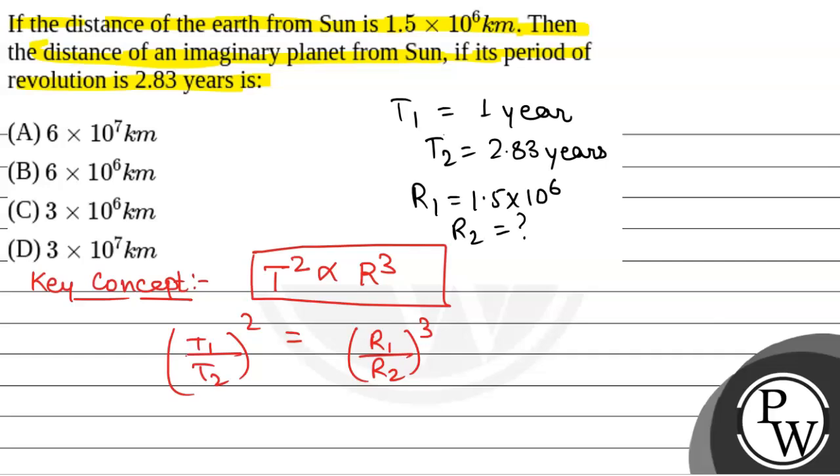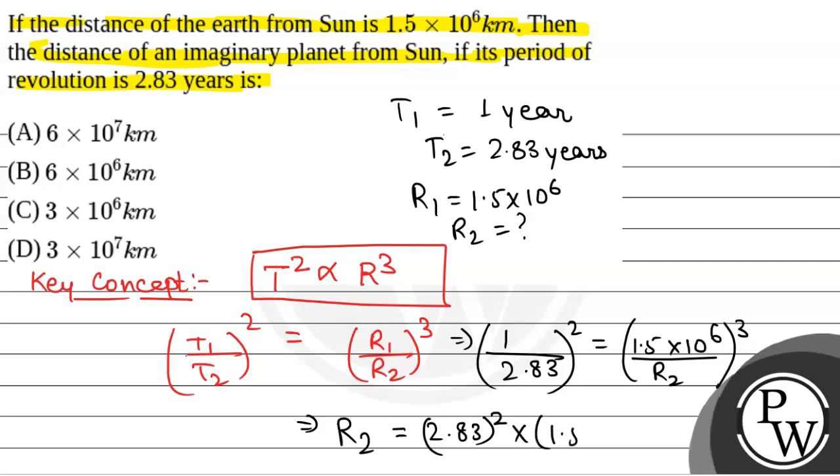We will just put the value that will be 1 divided by 2.83 whole square is equal to 2.83 whole square is equal to 2.83 square into 1.5 into 10 to the power 6 to the whole power 3.